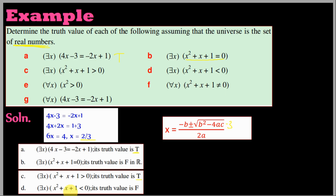Therefore, there exists some x which satisfies x squared plus x plus 1 less than zero — the truth value is FALSE.